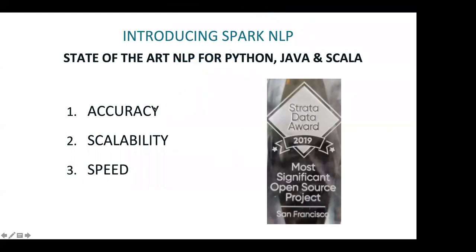Spark NLP is an open source project for Python — Python is by far the most used — and also for Java and Scala, with complete full APIs for both. In terms of what we focus on, the first and most important thing is accuracy. The goal is to deliver the best accuracy possible in a production-grade, trainable, and scalable fashion, and also to be the best library in terms of scalability.